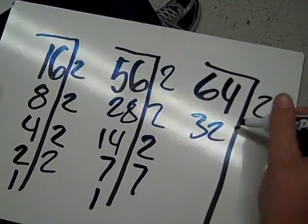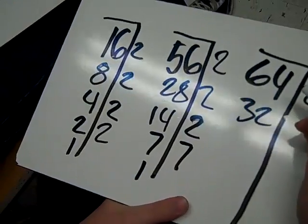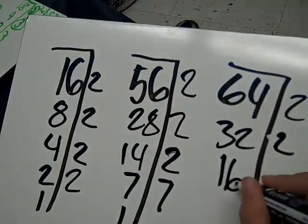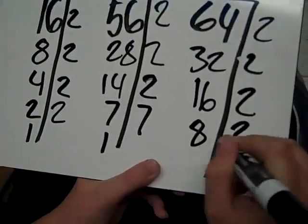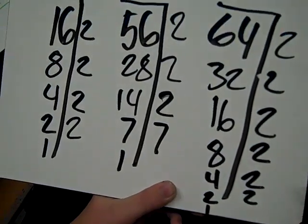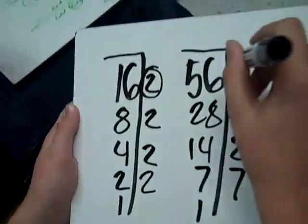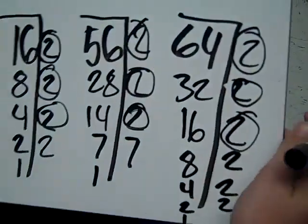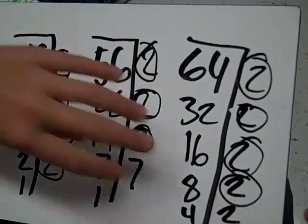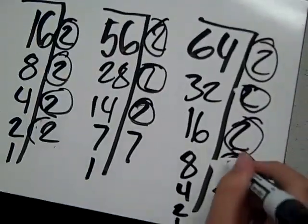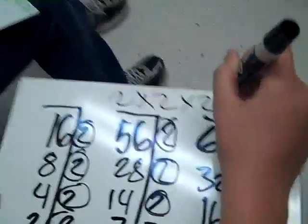64 divided by 2 equals 32. 32 divided by 2 equals 16. 16 divided by 2 equals 8. 8 divided by 2 equals 4. 4 divided by 2 equals 2. Then we circle the common ones. You have to have three of them to get one, so 2 times 2 times 2 equals 8.